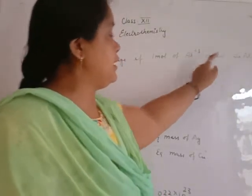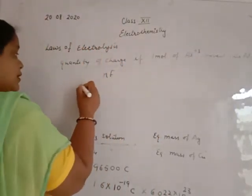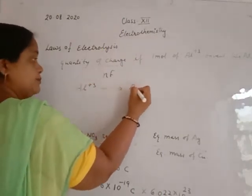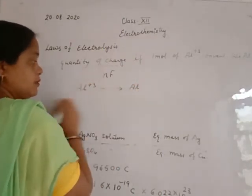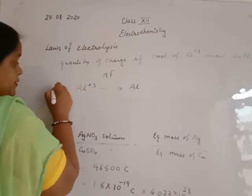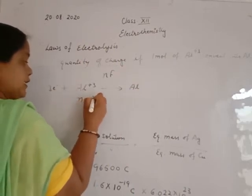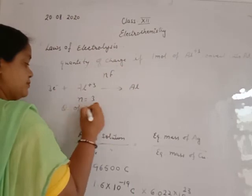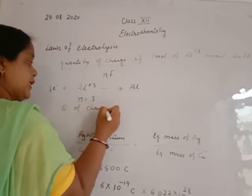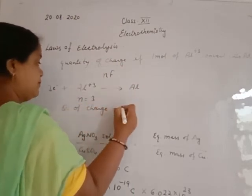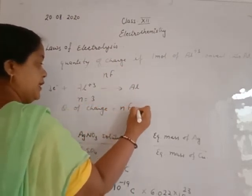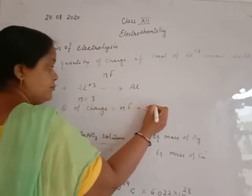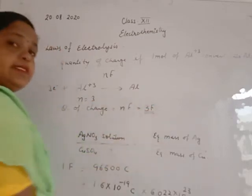For example, Aluminium³⁺ is converted to Aluminium. Aluminium³⁺ changes into Aluminium by the gain of 3 electrons. That means N equals 3. The quantity of charge is calculated by NF, where N equals 3 and F is the Faraday constant.